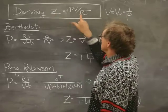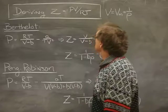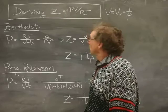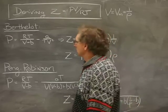This is the operative equation here. Z is defined by the pressure times volume divided by RT. The pressure is going to be given not by the ideal gas law, but by some other equation of state, for example, the Berthelot or the Peng-Robinson.